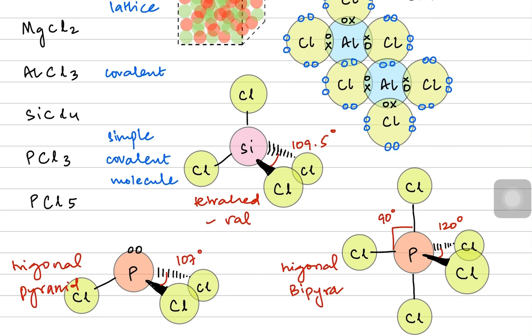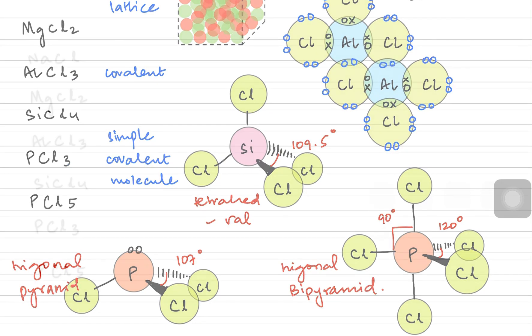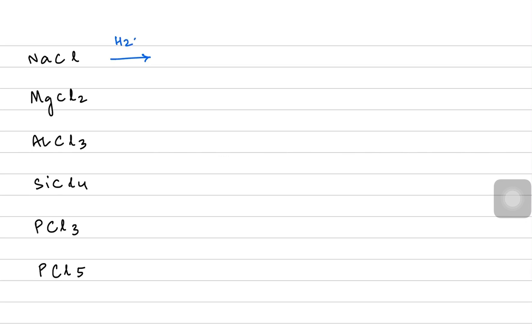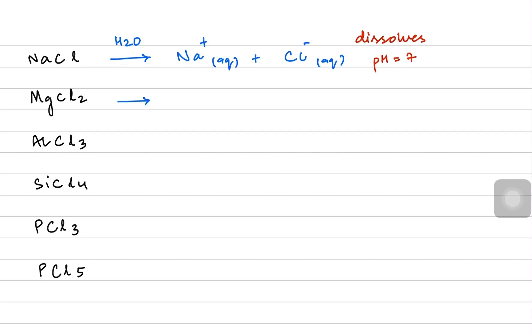Now we'll talk about the behavior of these chlorides in water. When sodium chloride dissolves it dissociates to form sodium positive and chloride negative ions. It is a neutral salt, so it dissolves completely and we get a pH 7 solution. When magnesium chloride dissolves we get magnesium ions and two chloride ions in water.